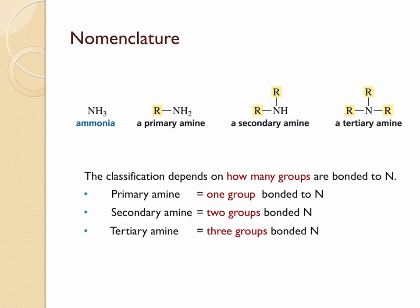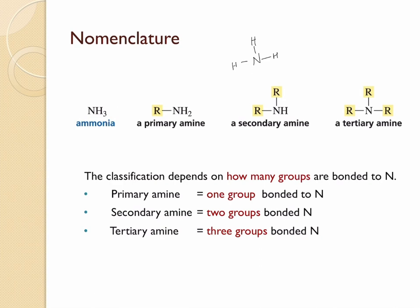Nomenclature of amines. Amines are compounds derived from ammonia. When you replace one or more of the hydrogens present in ammonia, you get amines. If you replace only one hydrogen with an R group or an aryl group, it's called a primary amine. Replace two hydrogens and it's a secondary amine. Replace all three hydrogens and it's a tertiary amine. In primary amines, nitrogen is bonded to only one group with two hydrogens. In secondary amines, nitrogen is bonded to two groups, and in tertiary amines, it is bonded to three groups.